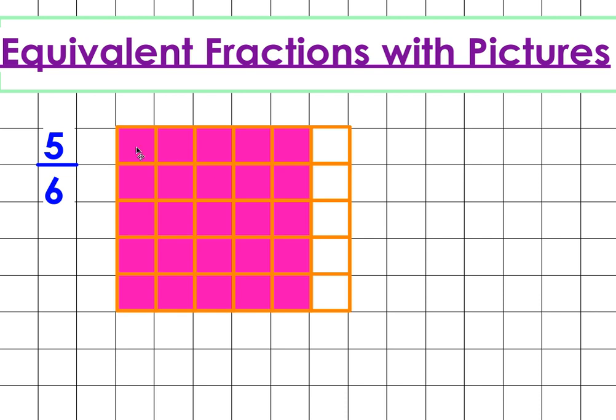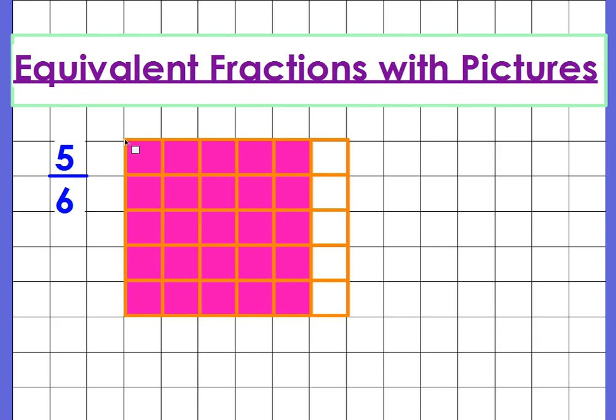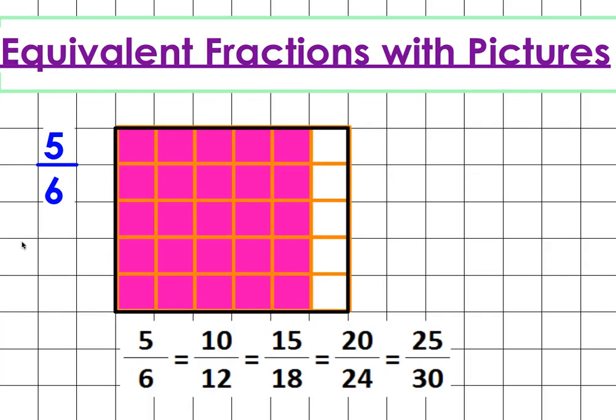Here are the pictures I drew. First off, I started with six squares and I shaded five of them, giving me five out of six. And then I just kept adding rows. So with an extra row, I then had 10 out of 12, and then 15 out of 18, 20 out of 24, and 25 out of 30. And obviously, we could keep going in this way and keep adding more and more rows to find more and more equivalent fractions.